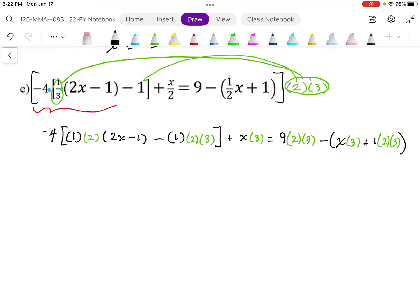So I'm going to combine some terms here. So I end up with 2, 2x minus 1, minus, this becomes 6, brackets, plus 3x, equals, this becomes 9 times 2 times 3, which is 54, minus, keep the brackets, 3x plus 6.